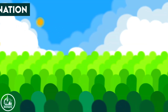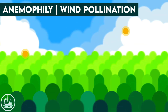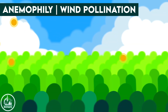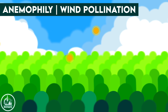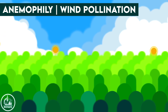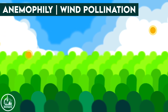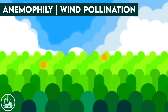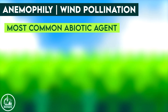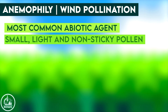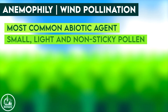Wind pollination, or anemophily: the pollen of a wide range of plants including monocots and gymnosperms are carried by wind. Wind pollination is the most common abiotic agent. To make it possible, the plants show features like the presence of small, light, and non-sticky pollen.